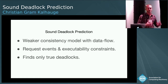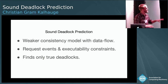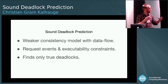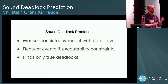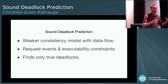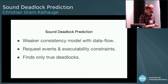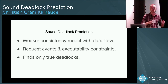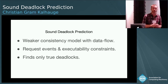What we essentially did — and the three things I want you to take away from this talk, except for maybe just reading my paper — is that we took a data race model, especially the SMT solver kind, and extended its consistency model with a data flow model, which enabled us to find more deadlocks and also data races. We also added request events and executability constraints to the solver mechanism, and that enabled us to find deadlocks at all. And we also guarantee with a proof that we find only true deadlocks.